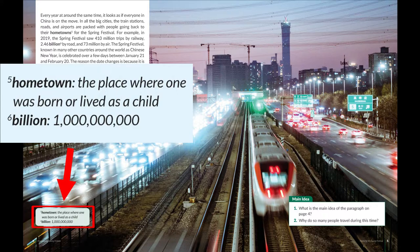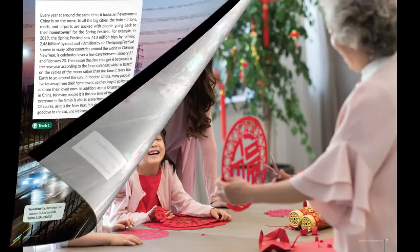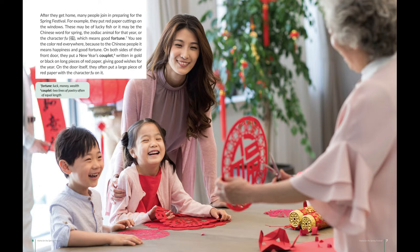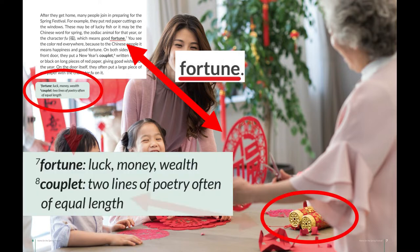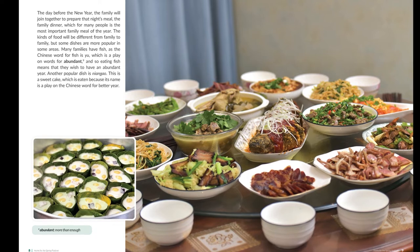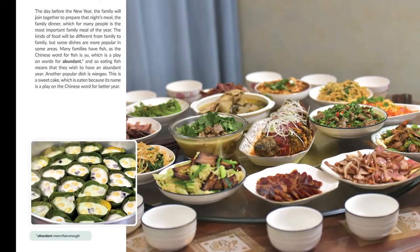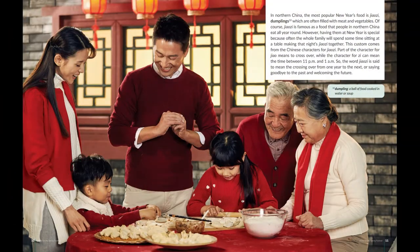Besides glossary support, there are also comprehension questions to help students understand the content. The first section covers the days before Spring Festival, when family members put up spring couplets together as blessings. Vocabulary support provides picture-text explanations. The second section covers how Chinese people cherish gathering for the reunion dinner.